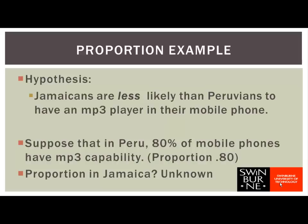We start with an odd sort of proposition — we put up a straw man and try to knock it down. What if the proportion of mobile phones with an MP3 player was exactly the same in Jamaica as in Peru? In many textbooks this is referred to as the null hypothesis. If we took a whole heap of samples from a population where 80% of mobile phones have an MP3 capability, we'd look at what sorts of proportions we'd expect to find. Then if our Jamaican sample doesn't look like it fits those Peruvian samples, it would suggest the percentage is different in Jamaica.